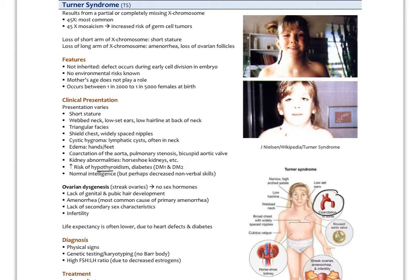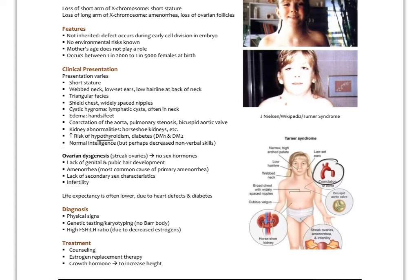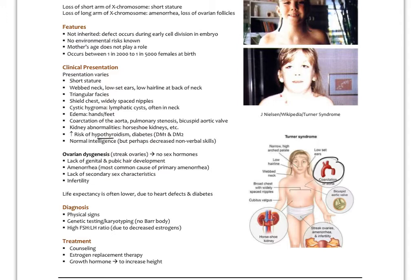Turner syndrome is also associated with coarctation of the aorta, pulmonary stenosis, bicuspid aortic valve, increased risk of kidney abnormalities like horseshoe kidney, increased risk of hypothyroidism, and both type 1 and type 2 diabetes. Patients typically have normal intelligence, though there may be some decrease in nonverbal skills. For endocrine purposes, the most significant feature is ovarian dysgenesis — often streak ovaries with no sex hormone production — leading to lack of genital and pubic hair development at menarche, primary amenorrhea, lack of secondary sex characteristics, and infertility.